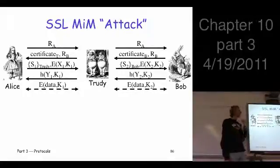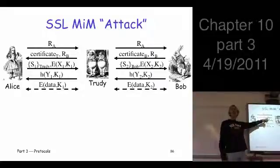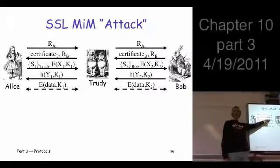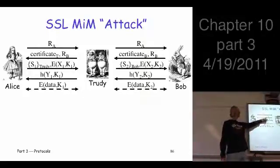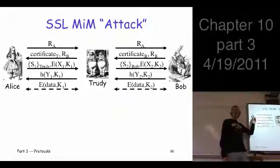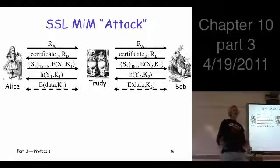Why does she send her own certificate? She's not supposed to send Bob's. Why doesn't she send Bob's certificate? Well, if she sends Bob's certificate, this is going to be encrypted with Bob's public key, and she can't decrypt it, and she can't convince Alice that she's Bob. So she sends her own certificate.